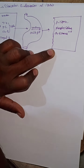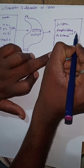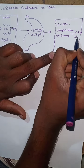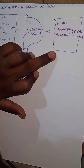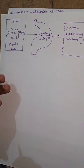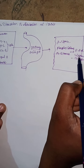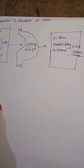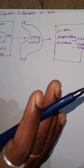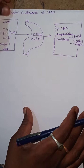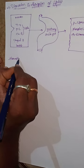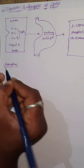In the intestine, the compounds are converted to free fatty acids, glycerol, and cholesterol. The free fatty acids and glycerol then enter the absorption process. This is the diagrammatic representation of how lipids are digested in the body.